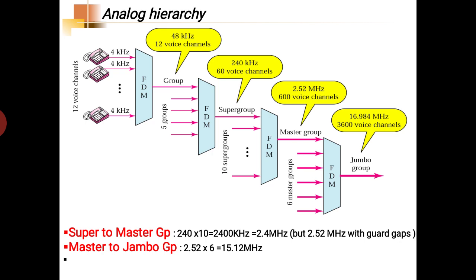Initially, 12 voice channels are multiplexed by the first multiplexer and this single line is called a group. 12 devices are multiplexed on a single line, carrying 4 into 12, that is 48 kilohertz bandwidth. Here 5 groups are multiplexed together and the next multiplex unit is called a supergroup, that is 5 into 48 equals 240 kilohertz.